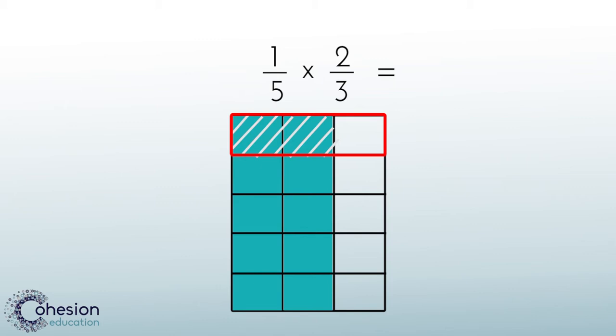Now we can see that our model is completed and that we have some of the pieces that have been double shaded or shaded twice. This is what we will use to find our product. The first thing we need to do to find the product is to find our denominator, which is how many total pieces our entire model is cut into. If we count the five rows of three, we get 15 pieces.